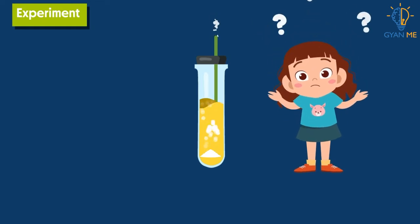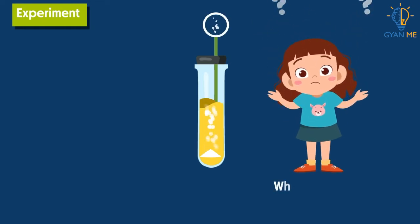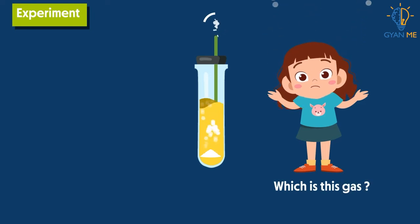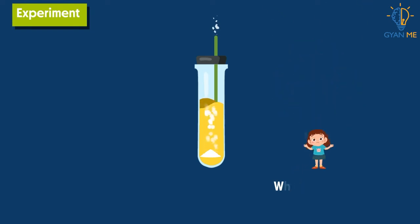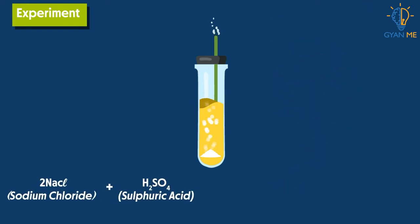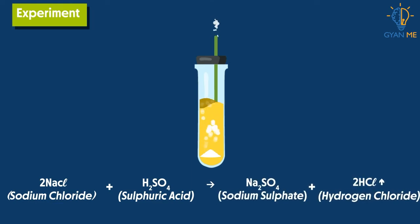What do you observe? Is there some gas coming out of the delivery tube? Yes. Which is this gas? For this, let us write the chemical equation of this reaction. NaCl plus H2SO4 gives Na2SO4 plus HCl. From this equation, we can say that the gas which has been released is hydrogen chloride, which is acidic.